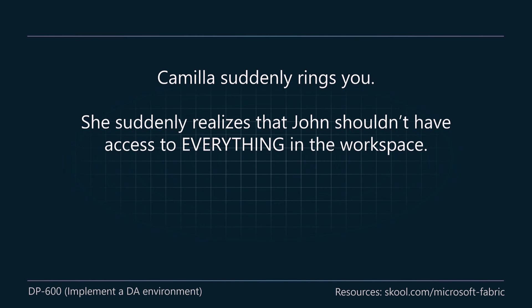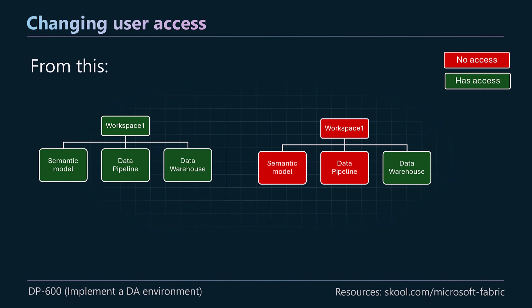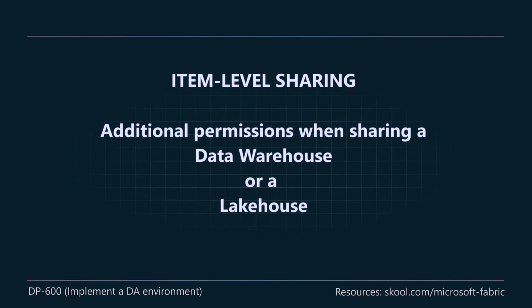Camilla rings to say John shouldn't have access to everything — only the data warehouse, not the semantic model or data pipeline. This reflects the principle of least privilege: give people the access they need to perform their roles and nothing more. One way to achieve this is to give people item level access — access only to what they need.